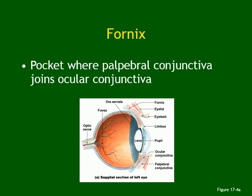The pocket where the palpebral and ocular conjunctiva meet is called the fornix. The ocular conjunctiva covers the eye, then reflects and makes a pocket — that bending point is the fornix. From there it lines the upper and lower eyelid.